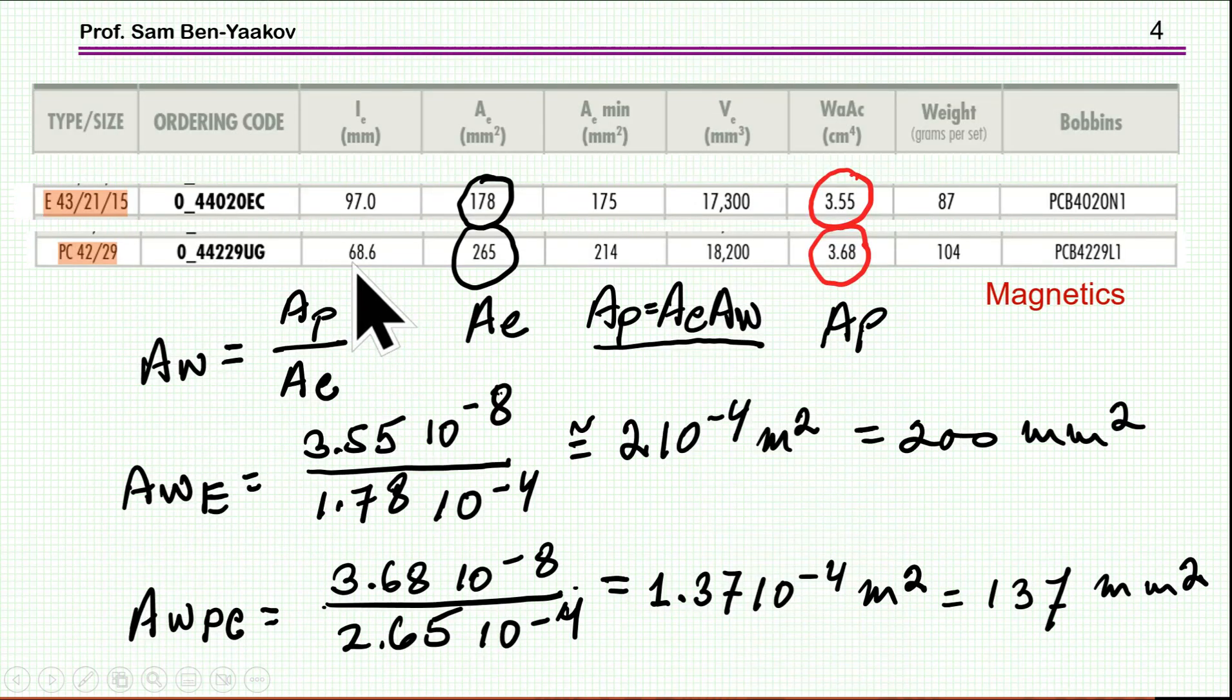Looking at the data for these two cores from Magnetics Catalog, this is the E-core and this is the pot-core. What is important at this point is that the cross-section area of the core of one of them is 178 millimeter square and the other is 265, so there is quite a bit of difference between them. And this is actually the purpose of this presentation, to see what happens if you have two different cross-section areas.